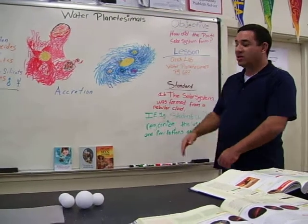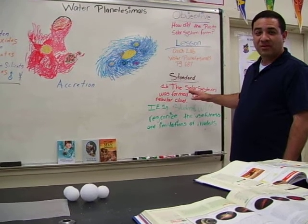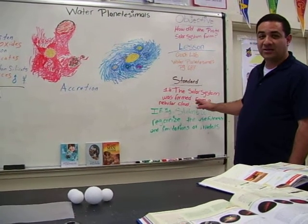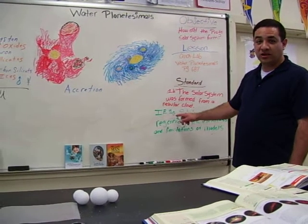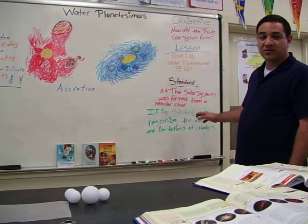The two California standards that we'll be touching on are 1B: Students will understand that the early solar system was formed from a nebular cloud of gas and dust 4.6 billion years ago. Also, Investigation and Experimentation 1G: Students will recognize the usefulness and limitations of using models.